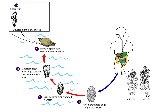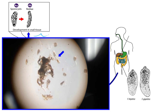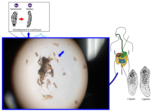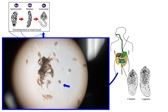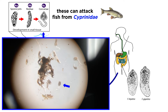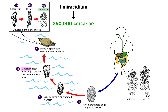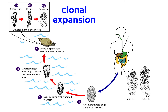There the miracidium metamorphoses into a sporocyst. Sporocysts reproduce asexually, and can produce additional sporocysts, or rediae. Rediae can also reproduce asexually to create more rediae, or the infectious cercariae that attack fish from the family Cyprinidae, such as carps and minnows. A single miracidium can give rise to 250,000 individual cercariae. This is an incredibly important point when considering the epidemiological risk posed by flukes. The clonal expansion within the intermediate host means that a location can go from low or no risk to high risk with minimal environmental contamination from eggs derived from the definitive host.